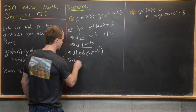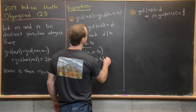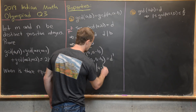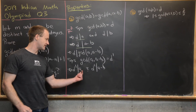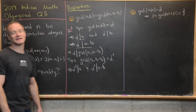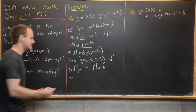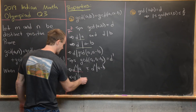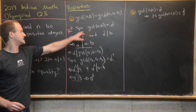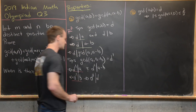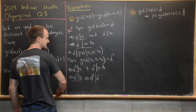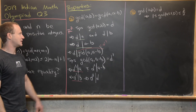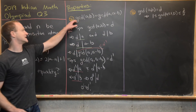Next, suppose that GCD(A, A-B) = D'. That tells us D' divides A and D' divides A minus B. That means D' divides the difference A minus (A minus B), which is B. So D' divides A and D' divides B, meaning D' divides GCD(A, B), which we called D. So we have D divides D' and D' divides D, which means D equals D'. That proves the property.